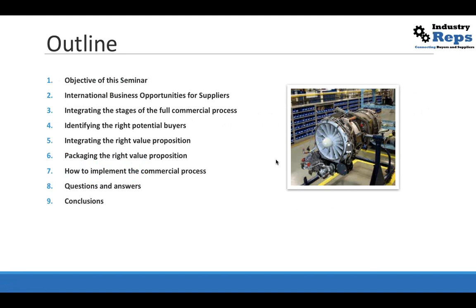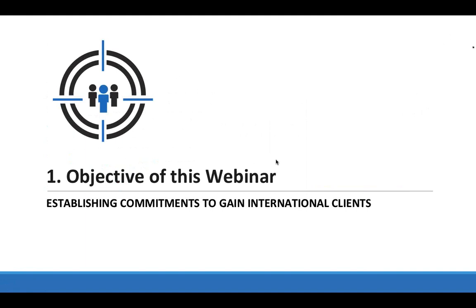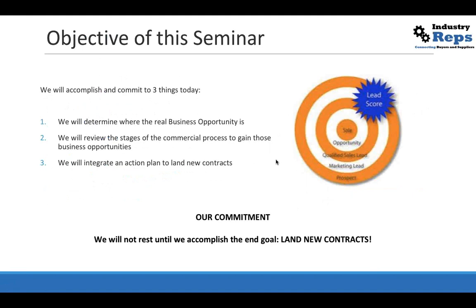Let's get started. The first point today is to establish the objective of this seminar. We're going to cover three things. Number one, we need to determine what the real business opportunity is. Number two, we're going to review the stages of the commercial process to gain those business opportunities. And then we're going to sketch how to integrate that action plan and strategy to actually go forward. Our commitment is we will not rest until we accomplish the goal — to land new contracts. That's the main goal.